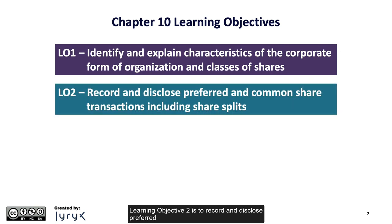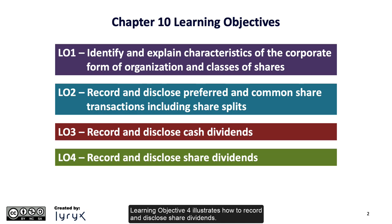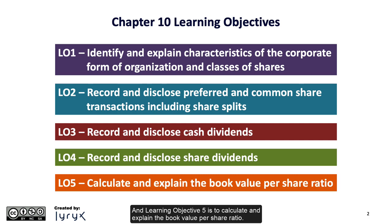Learning Objective 2 is to record and disclose preferred and common share transactions including share splits. Learning Objective 3 is to record and disclose cash dividends. Learning Objective 4 illustrates how to record and disclose share dividends. And Learning Objective 5 is to calculate and explain the book value per share ratio.